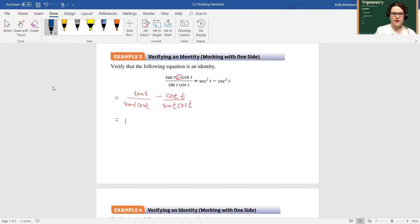Times one over sine t cosine t. And then now that hint of writing everything in terms of sine and cosine comes in.